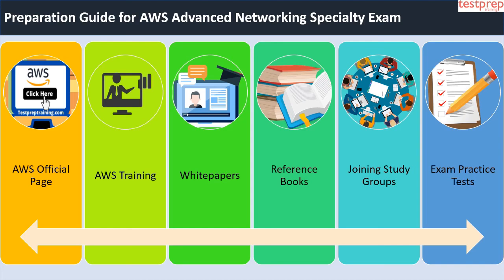Fourth, reference books: books can provide an advantage in learning and understanding things more accurately. For the AWS Advanced Networking Specialty exam, various books are available online or in libraries. Some include: one, AWS Certified Advanced Networking Official Study Guide — Specialty Exam; two, AWS Certified Advanced Networking Specialty Exam Guide for Building Knowledge and Technical Expertise as an AWS Certified Networking Specialist. Fifth, joining study groups: joining study groups helps you stay connected with others on the same pathway, where you can discuss exam-related issues and get answers to your queries.